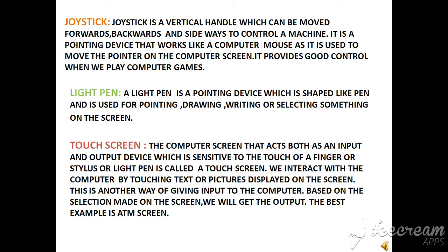Touch screen. A computer screen that acts both as an input and output device, which is sensitive to the touch of a finger, stylus, or light pen, is called a touch screen. We interact with the computer by touching text or pictures displayed on the screen. This is another way of giving input to the computer based on the selection made on the screen, and we will get the output.